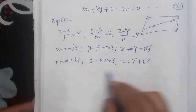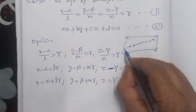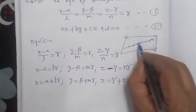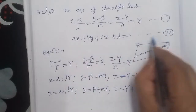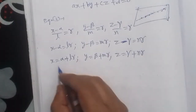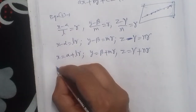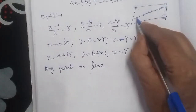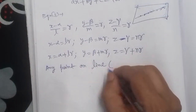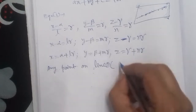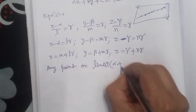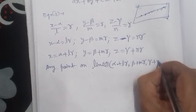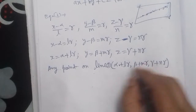All the points are taken from the plane. So this line will lie in the plane if we put any point on the line into the plane equation and it satisfies it. Any point on the line can be written with x-coordinate alpha plus lR, y-coordinate beta plus mR, and z-coordinate gamma plus nR.